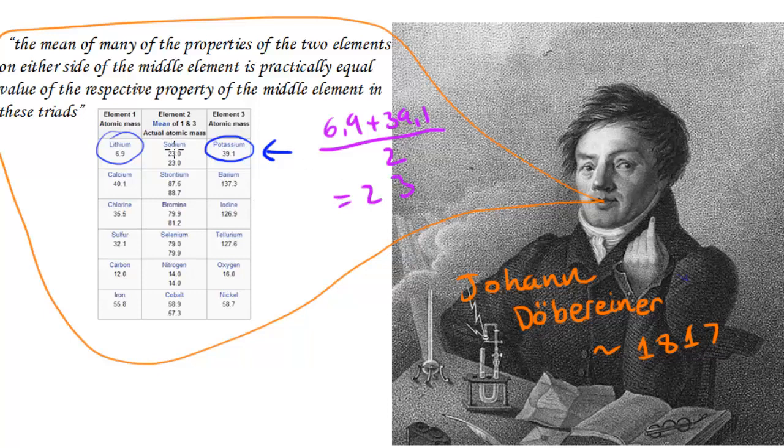You've probably noticed that 23 is the atomic mass of sodium which we have here, and he picked up on this. If you were to look at some of the properties and find a mean of them, you'd find that the middle element in these triads have very similar values to the values found from just finding the mean of those two elements.